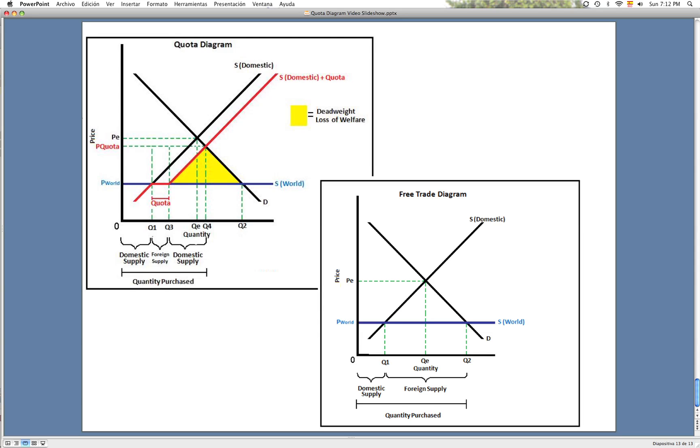We can see the difference between the first diagram, the one on the right that shows the free trade diagram without the quota imposed, and the left diagram in the upper part of the slide, which shows the quota diagram with all the consequences.